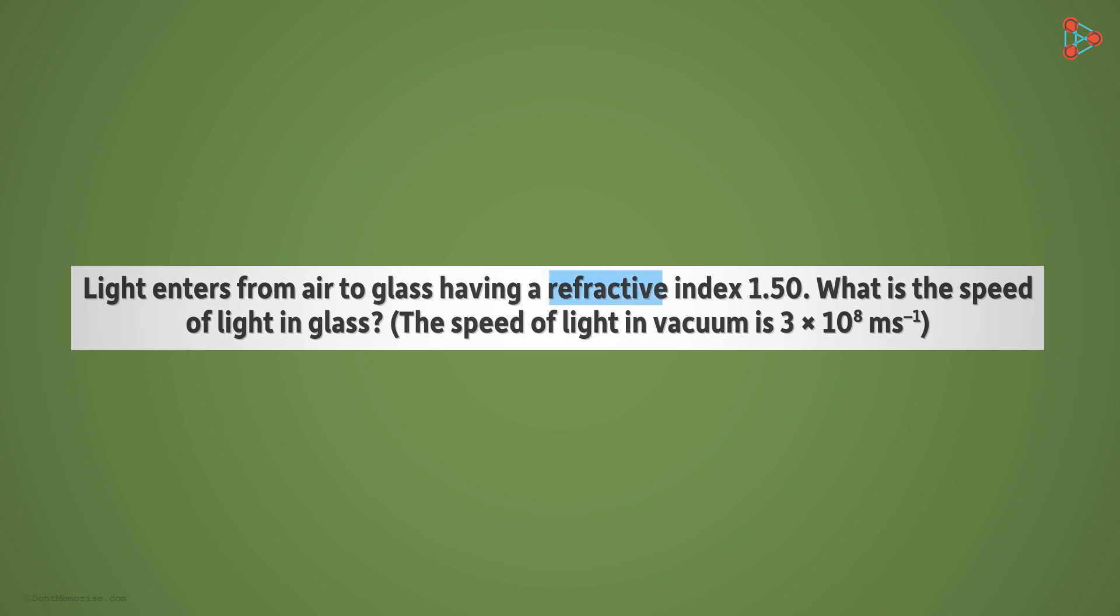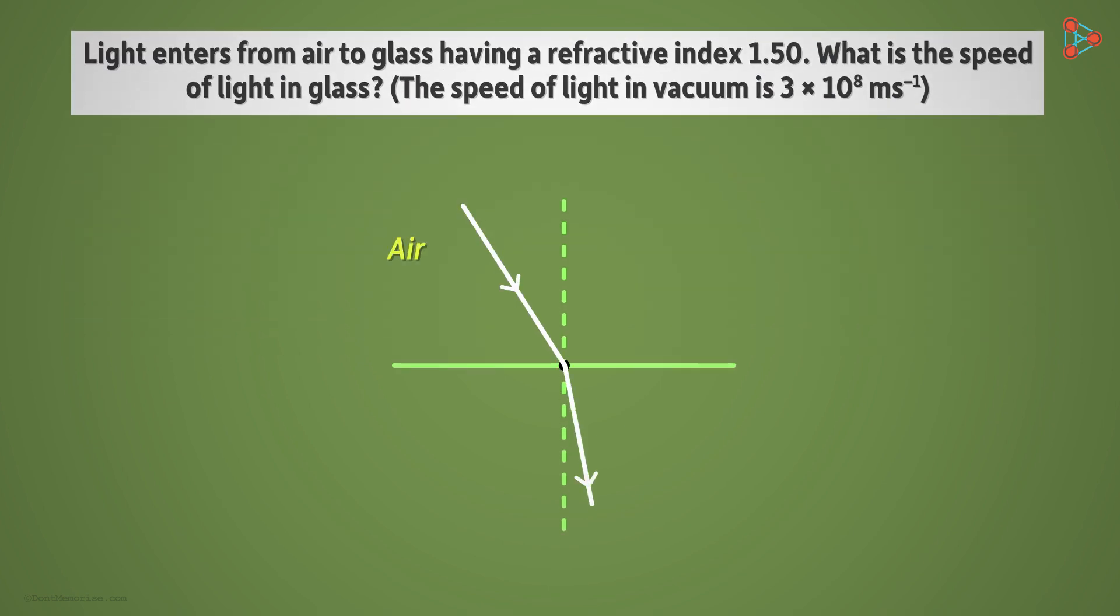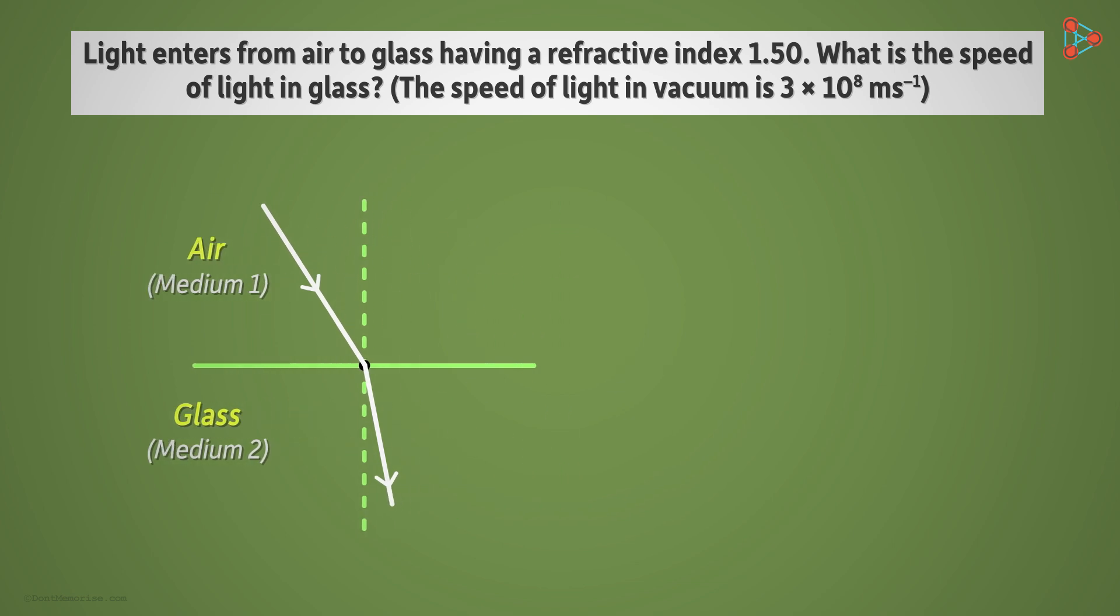We are given the refractive index of glass with respect to air as 1.50. Here, air is the incident medium and glass is the refractive medium. Let us take medium 1 as air and medium 2 as glass. So N21 is equal to 1.50.